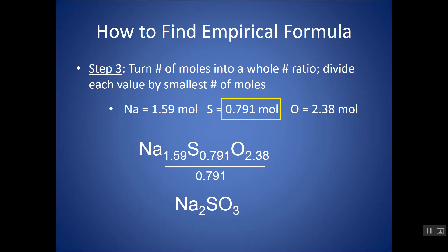So I'm going to take each of these numbers and divide by the smallest, which happens to be 0.791. Why the smallest? Because we would want the smallest to be 1. And if I do this, in this case, all the numbers work out nicely. 1.59 divided by 0.791 is 2. So I get 2, I get 1, I get 3. Now if you were to divide and you were to get something like 1.999, round that to 2. If you were to get something like 2.01, round that to 2.